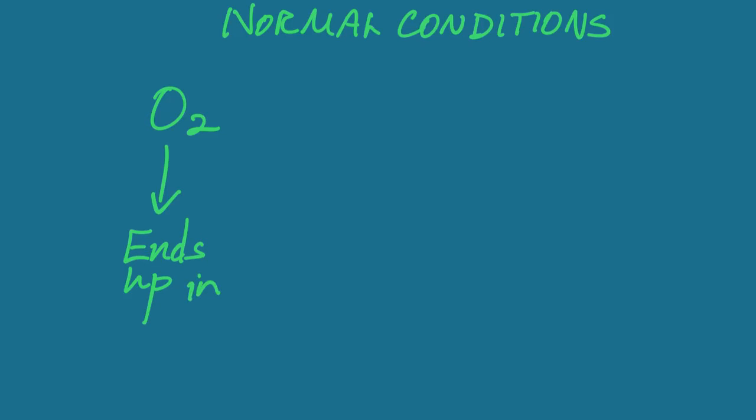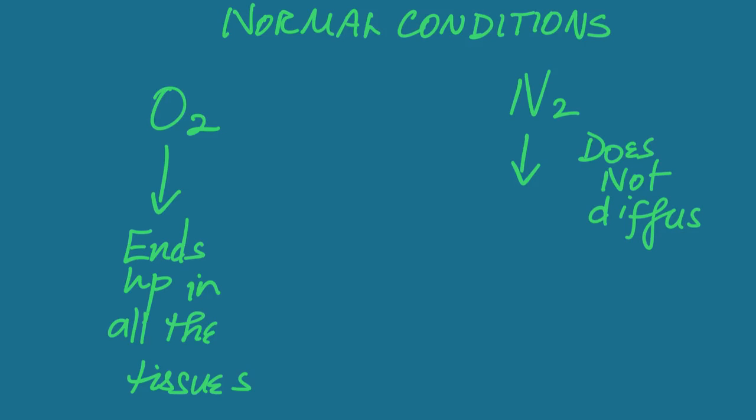So let's make this clear. Under Henry's law, we now know that in normal conditions, it is oxygen that ends up in our tissues. So oxygen diffuses across the capillary and alveolar walls, and they end up in all of our tissues. Nitrogen, on the other hand, does not diffuse across the alveolar and capillary walls because it is not soluble in water. And so it ends up being exhaled, along with carbon dioxide.